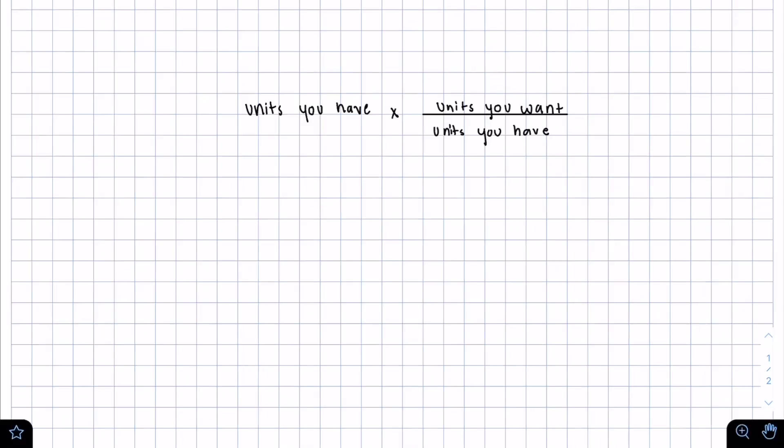In unit conversion problems, you want to multiply your starting units by the units that you want over the starting unit. So this is what it ends up looking like. And the second part here, that is called the conversion factor or the conversion ratio. This ratio is equal to one and what we use to get from one unit to another.